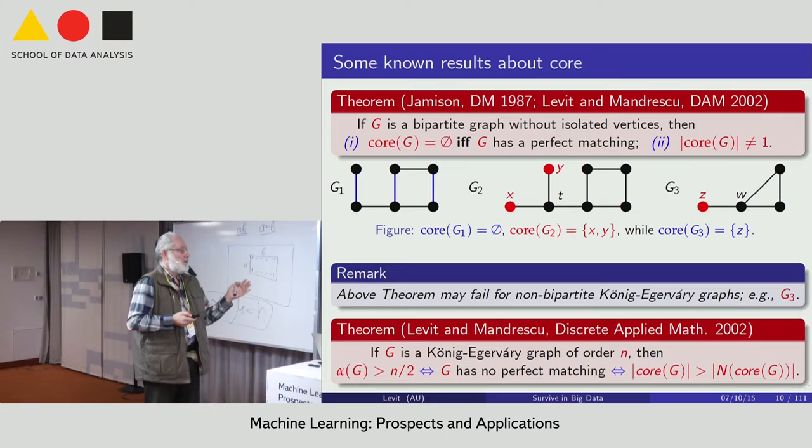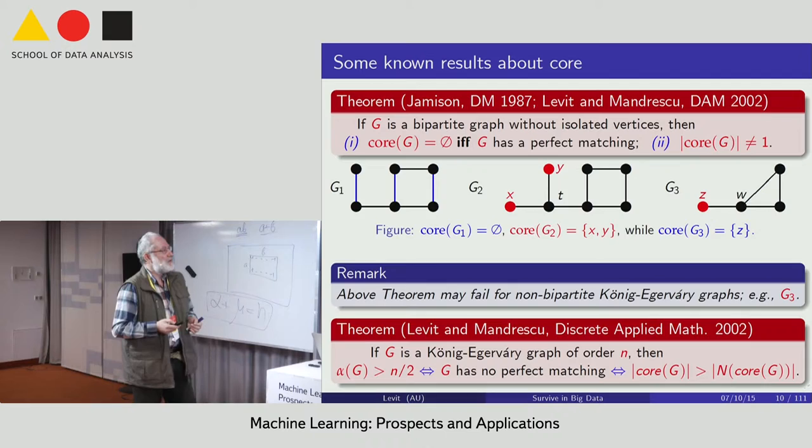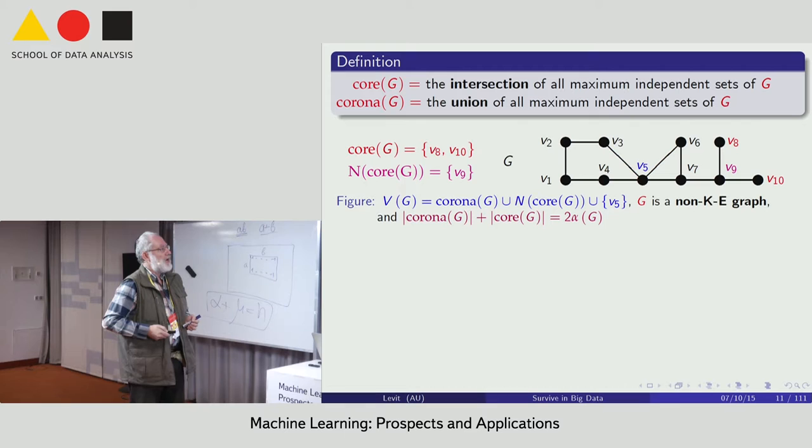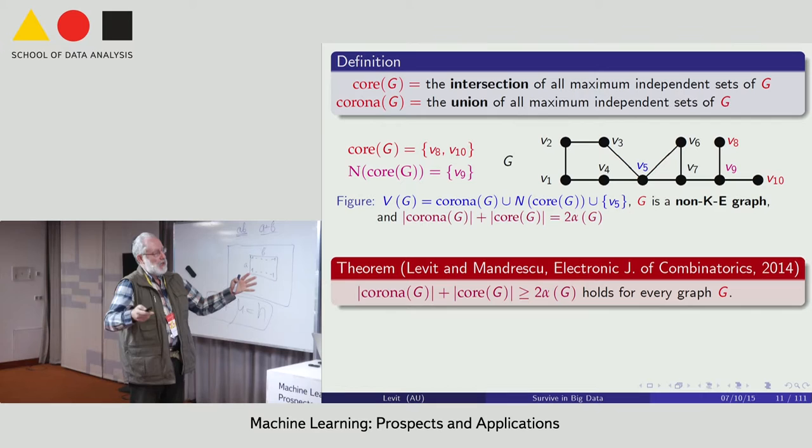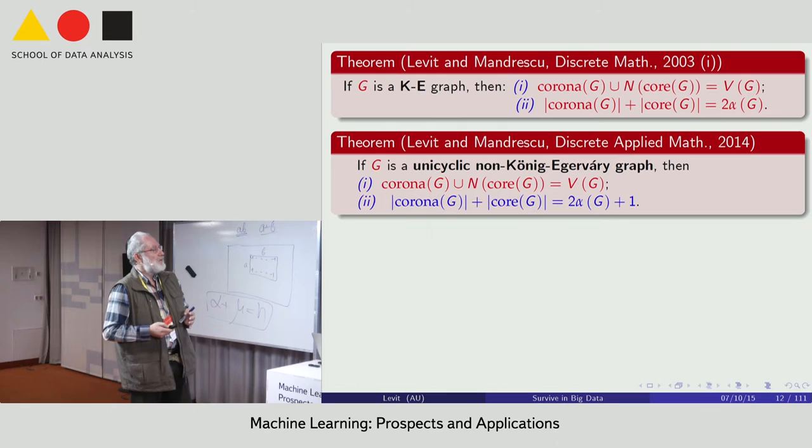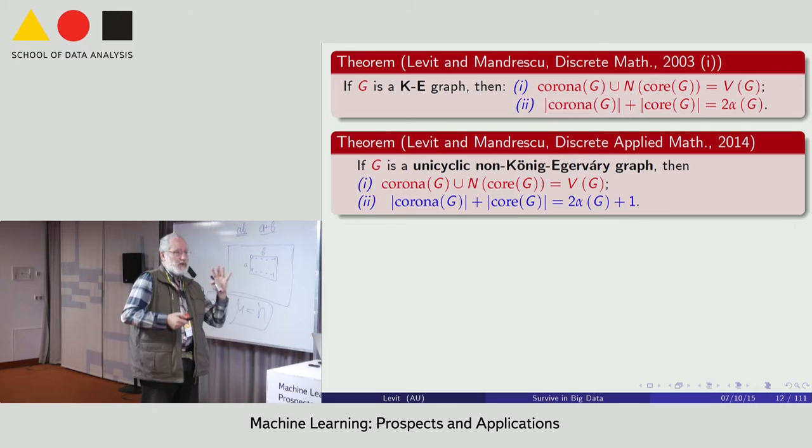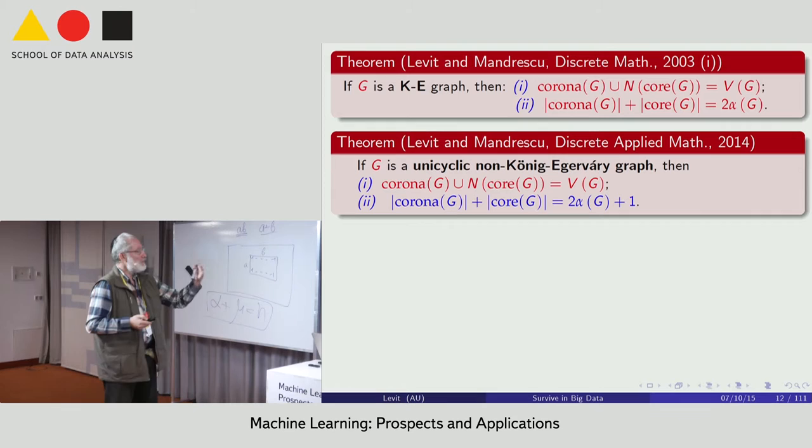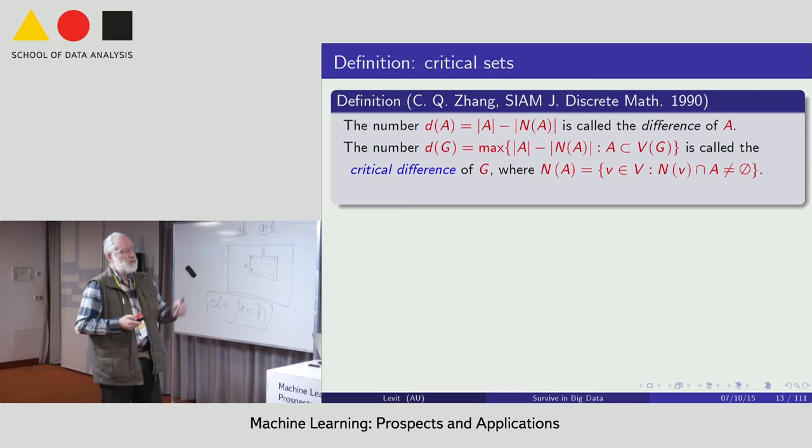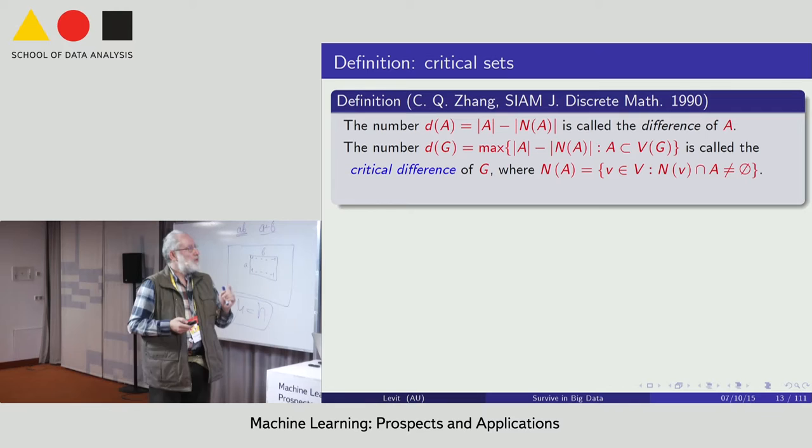When you think about König-Egerváry graphs, you have a lot of structural properties. The nice thing, also, some kind of beauty, when you have a König-Egerváry graph, then when for general graphs, union of all maximum independent sets plus the intersection of all of them is greater or equal than 2 alpha. For König-Egerváry graphs, you have exactly the equality. For König-Egerváry, the union and intersection exactly give you two times alpha. You can think about different, some kind, unicyclic, non-König-Egerváry graph. And let us continue with this. Just enjoy the beauty of all the pictures here.